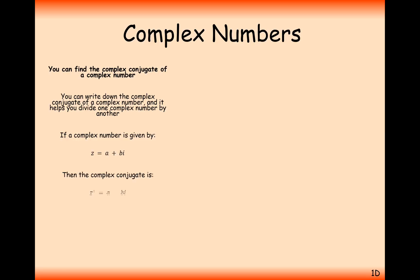A complex conjugate is basically the same complex number but the imaginary part has the sign flipped. So if we have one complex number that's A plus Bi, then the complex conjugate — represented by a Z with a star above it, or sometimes a bar above it — is equal to A minus Bi. So the real part stays the same, the imaginary part just has its sign flipped or negated.